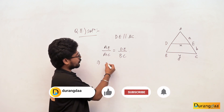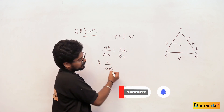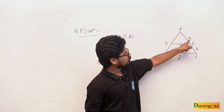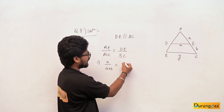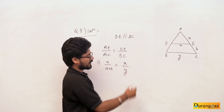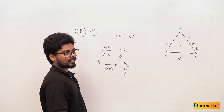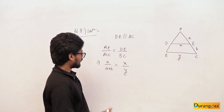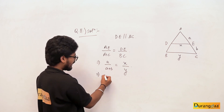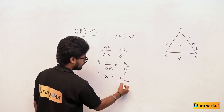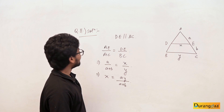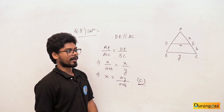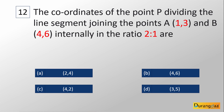The value of AE is given as 'a'. AC will be equal to a+b, since EB is b, so AC = a+b. DE is x and BC is y. So we get a/(a+b) = x/y, which gives x = ay/(a+b). The correct option is option C.